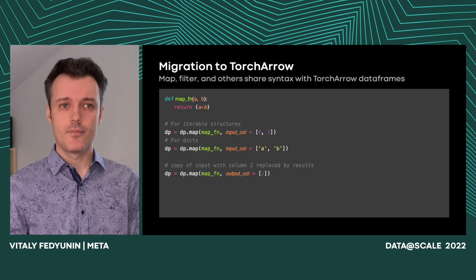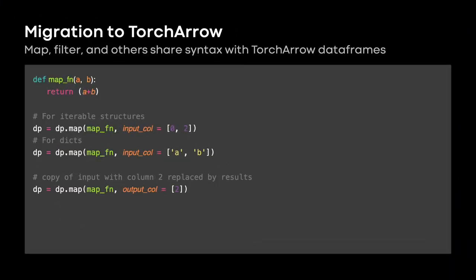Last but not least is data exchange format. Arbitrary Python objects are suitable for quick hacks and research, but they create a bunch of performance and portability problems in production. The perfect solution would be to enforce a singular data standard — TorchArrow — but it would significantly impact flexibility. For that reason, we are aiming to keep the best of two worlds. By allowing synergy between TorchArrow and data pipes, we allow users to seamlessly migrate from research to production.